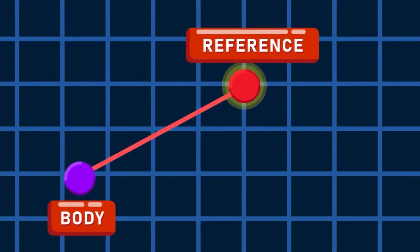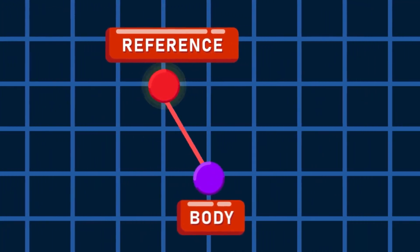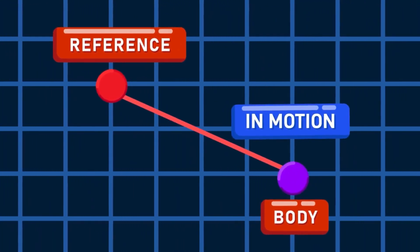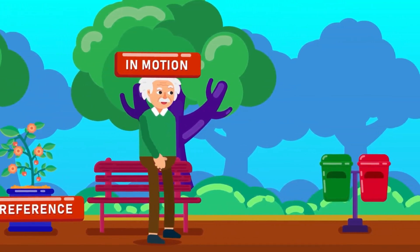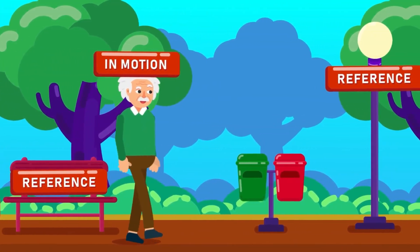What is motion? If a body continuously changes its position with respect to a reference frame, then it is said to be in a state of motion. For example, if you are walking in an empty park, you are in a state of motion with respect to the trees, benches and light poles around you.